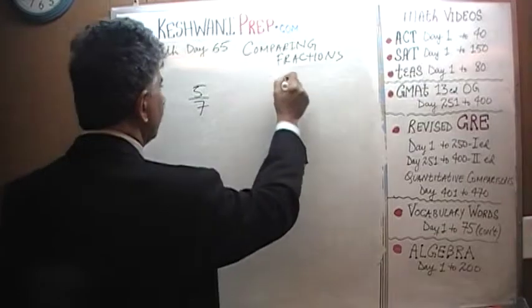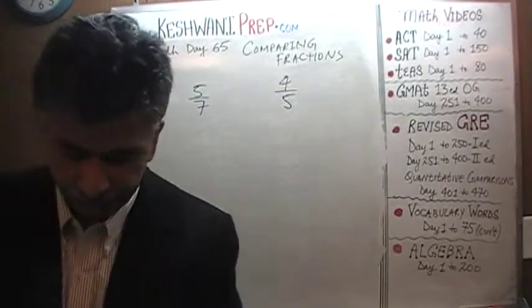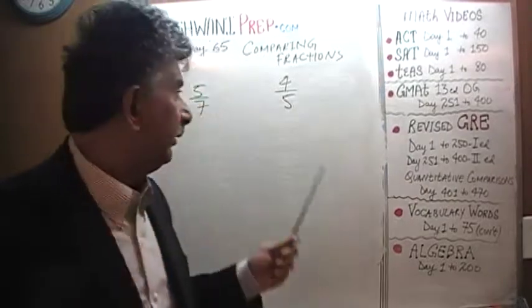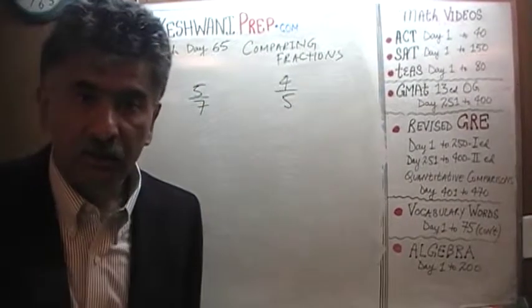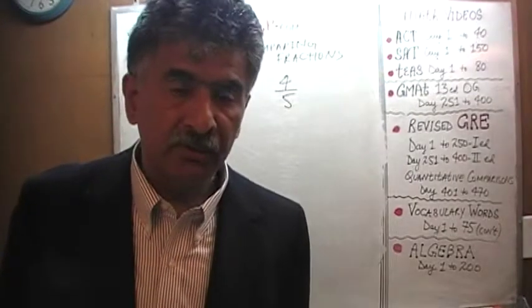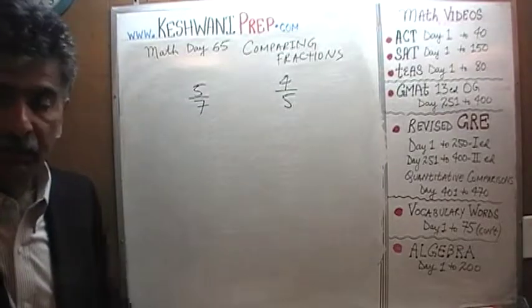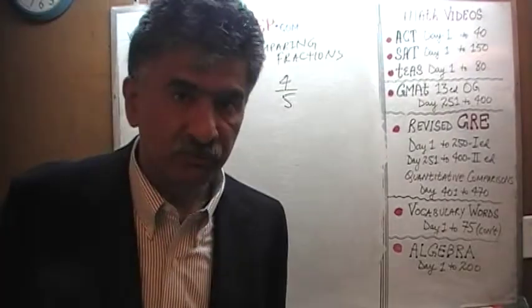5 sevenths versus 4 fifths. Now what we learned yesterday is that when we have to compare our fractions, our job should be to get rid of these denominators as quickly as possible. If you can get rid of the denominators, then all we are left with are the numbers on the numerator on the top. And that of course is a very straightforward business to compare.